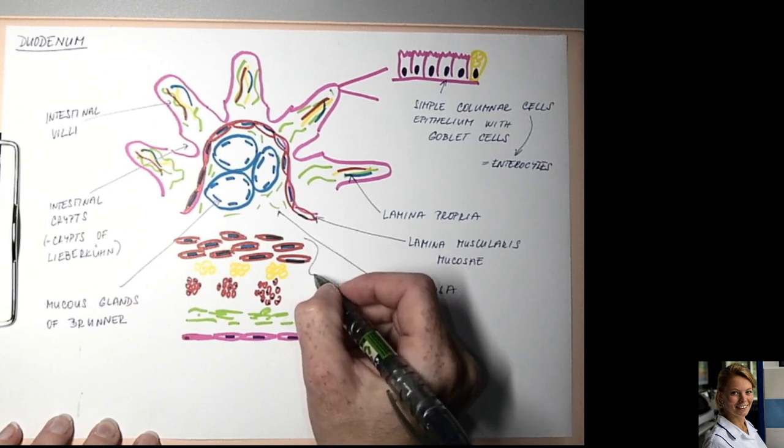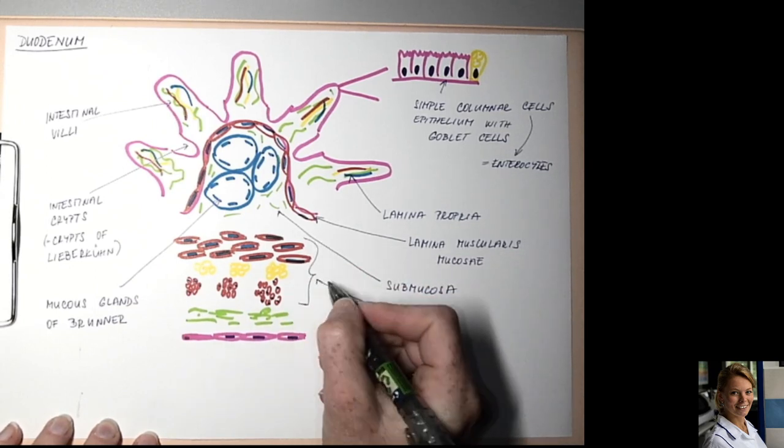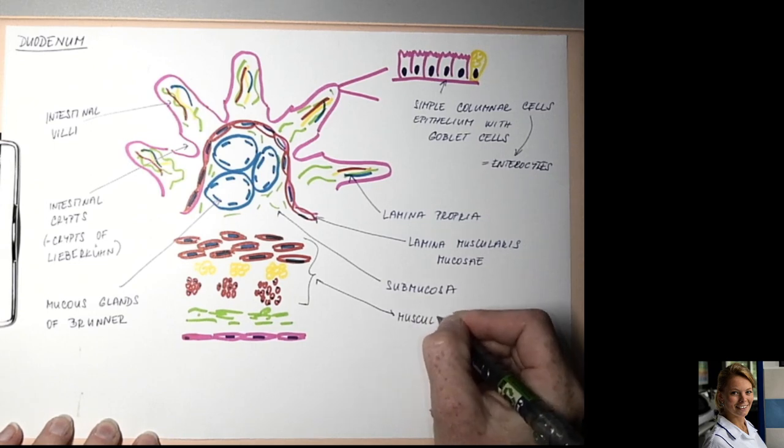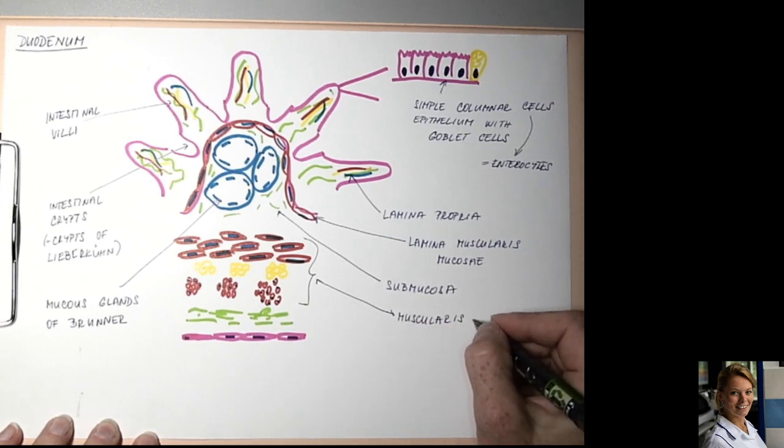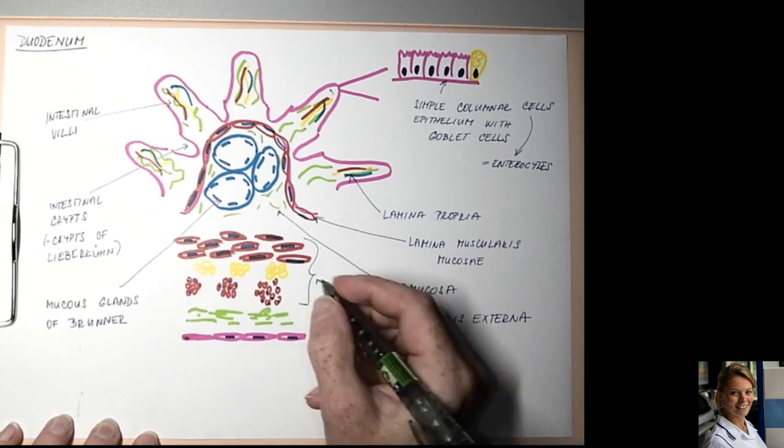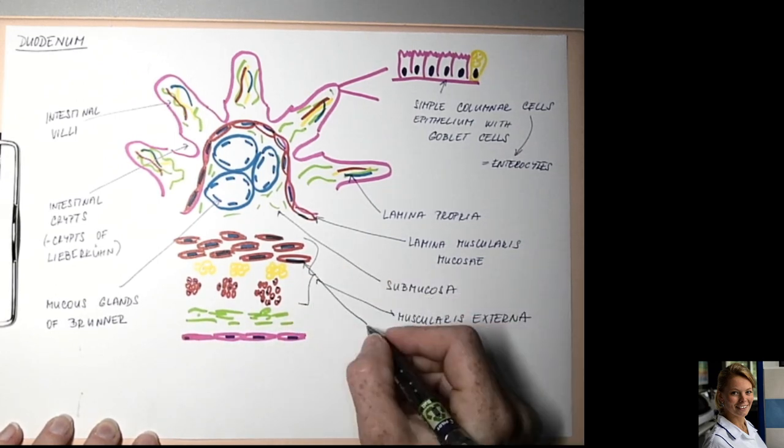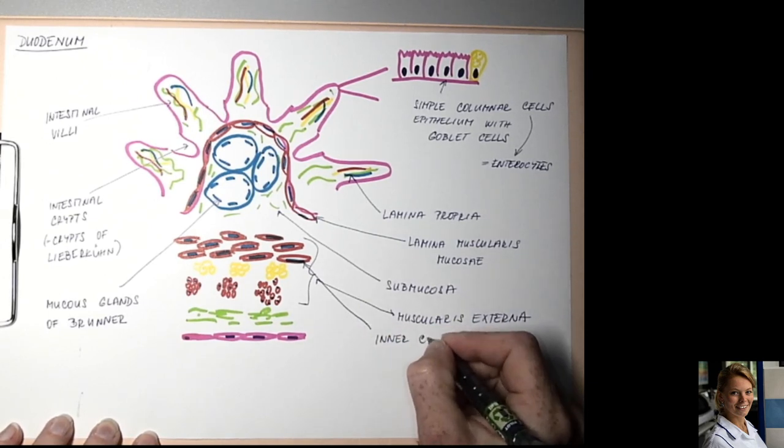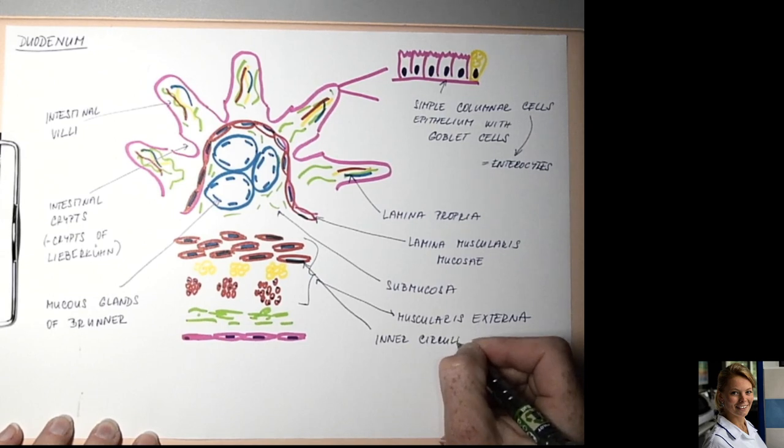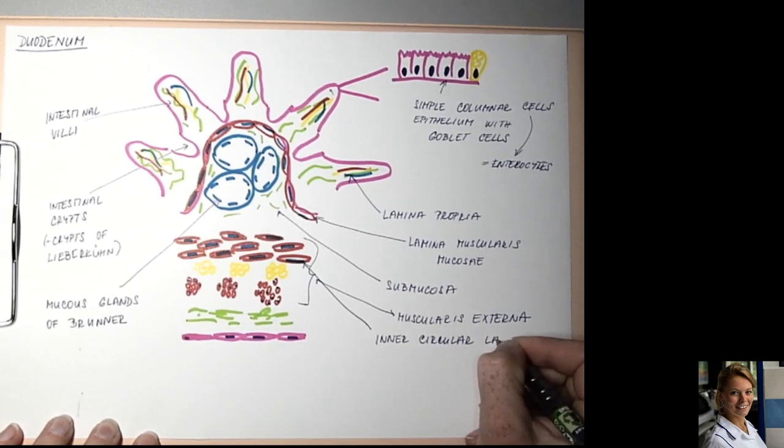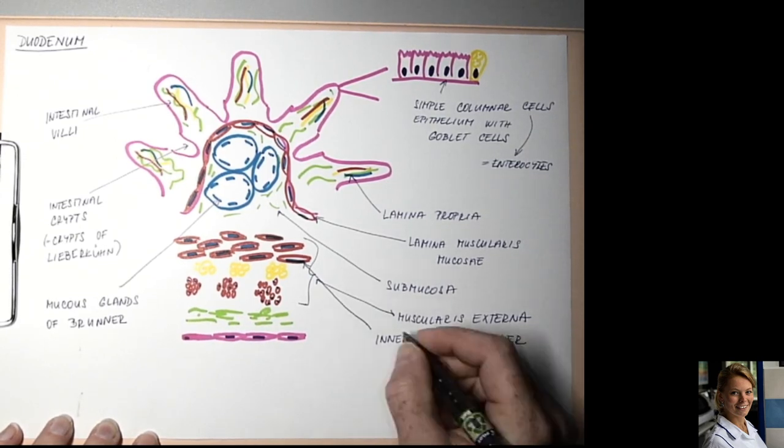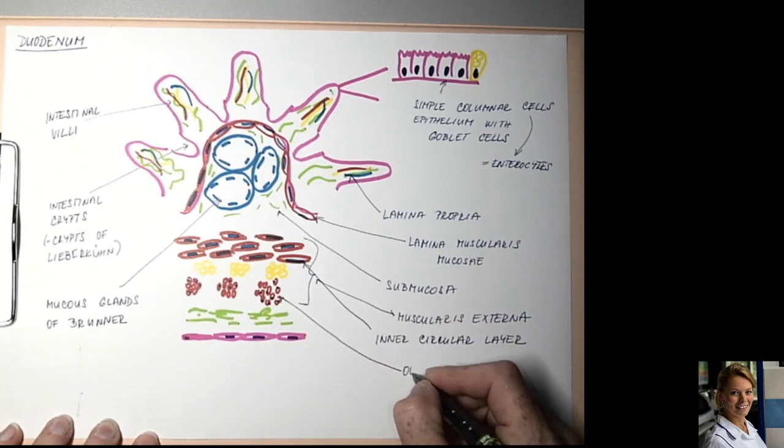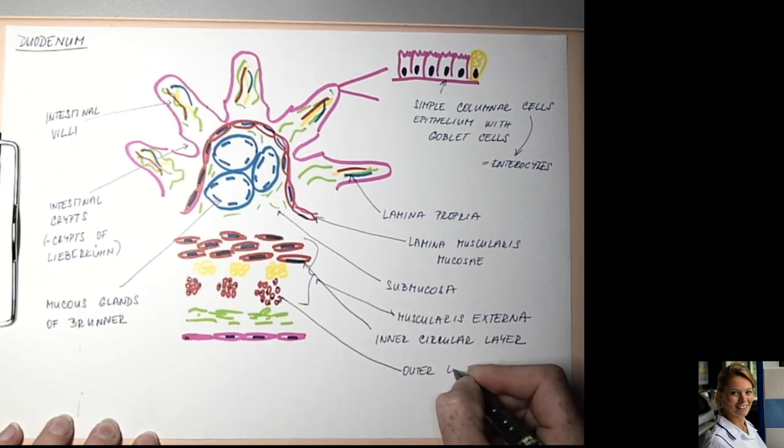Muscularis externa with the inner circular layer and outer longitudinal layer.